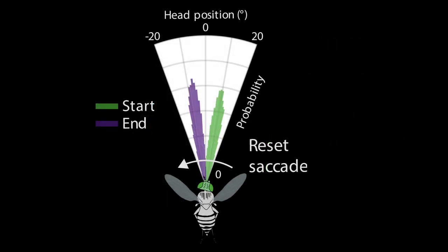We noted that head saccades almost always started when the head was offset to one side of the neck and ended on the other side of the neck, almost always moving in the opposite direction of visual motion. For this reason, we refer to head saccades as head reset saccades.